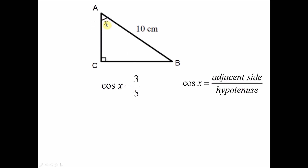The adjacent side for angle x is AC, and the hypotenuse is AB because the hypotenuse is the longer side opposite the right angle. So the adjacent side is AC and hypotenuse is AB. We rewrite cosine as AC over AB according to this formula. So cosine x equals 3 over 5, hence AC over AB also equals 3 over 5.